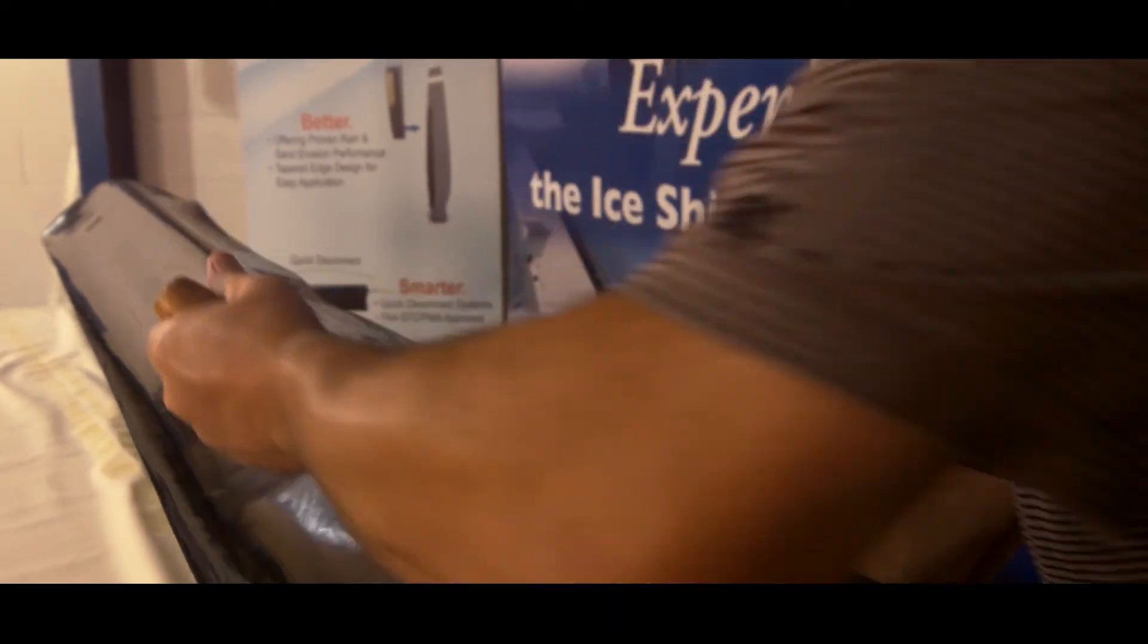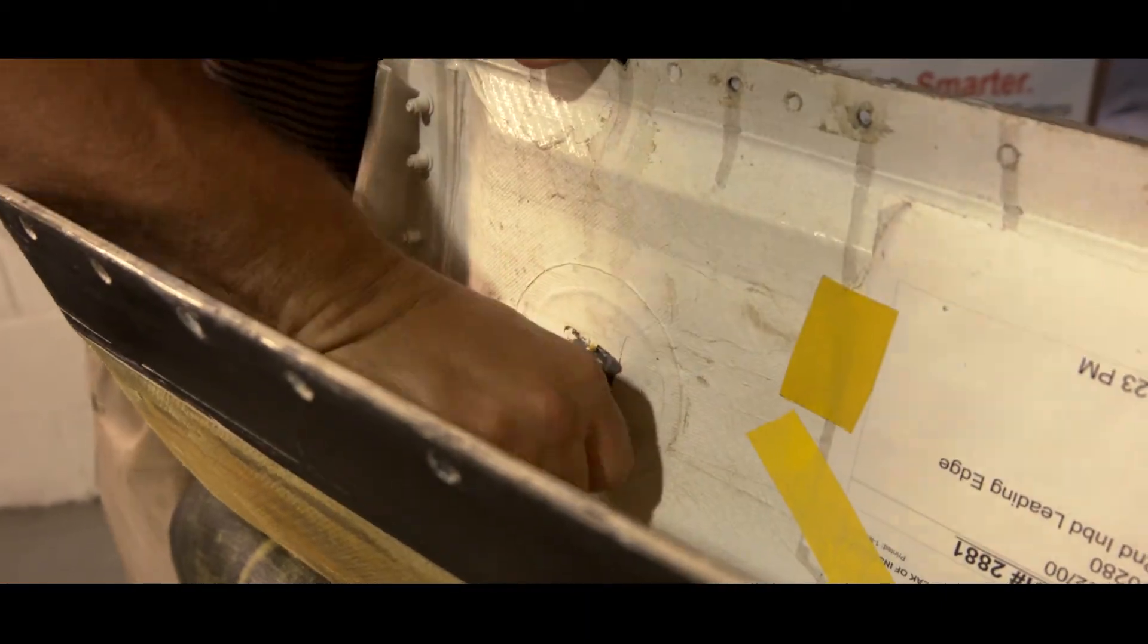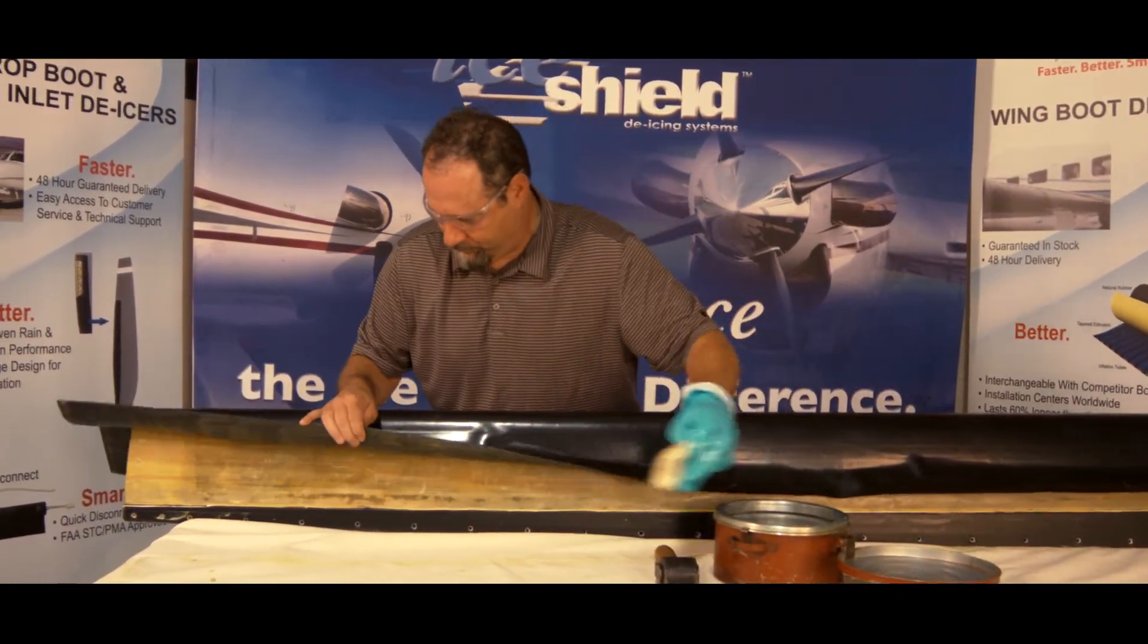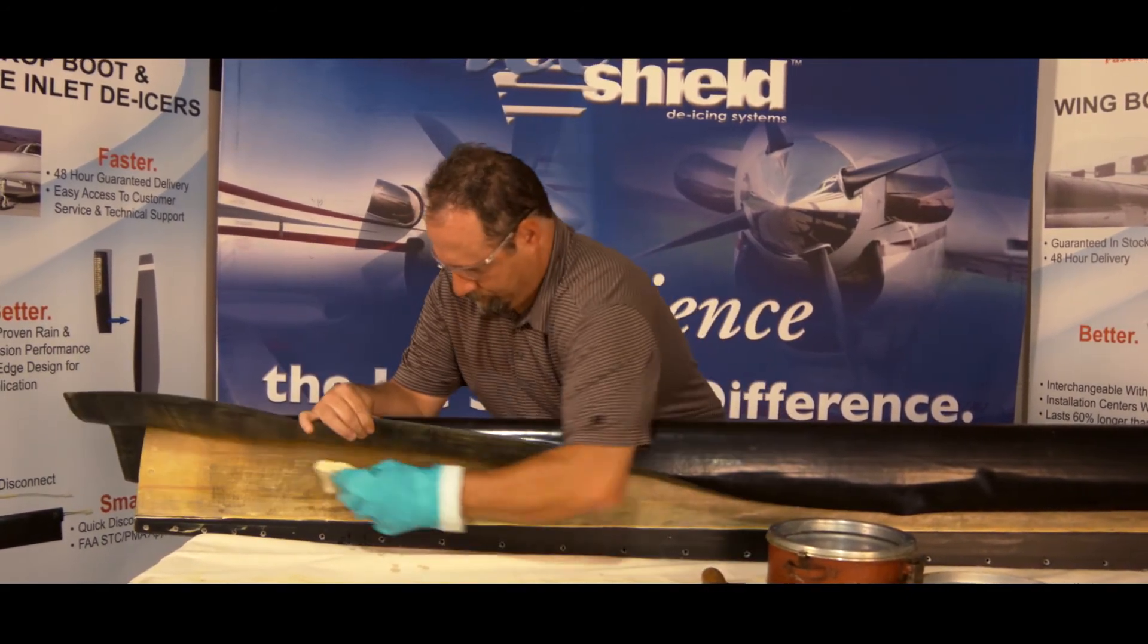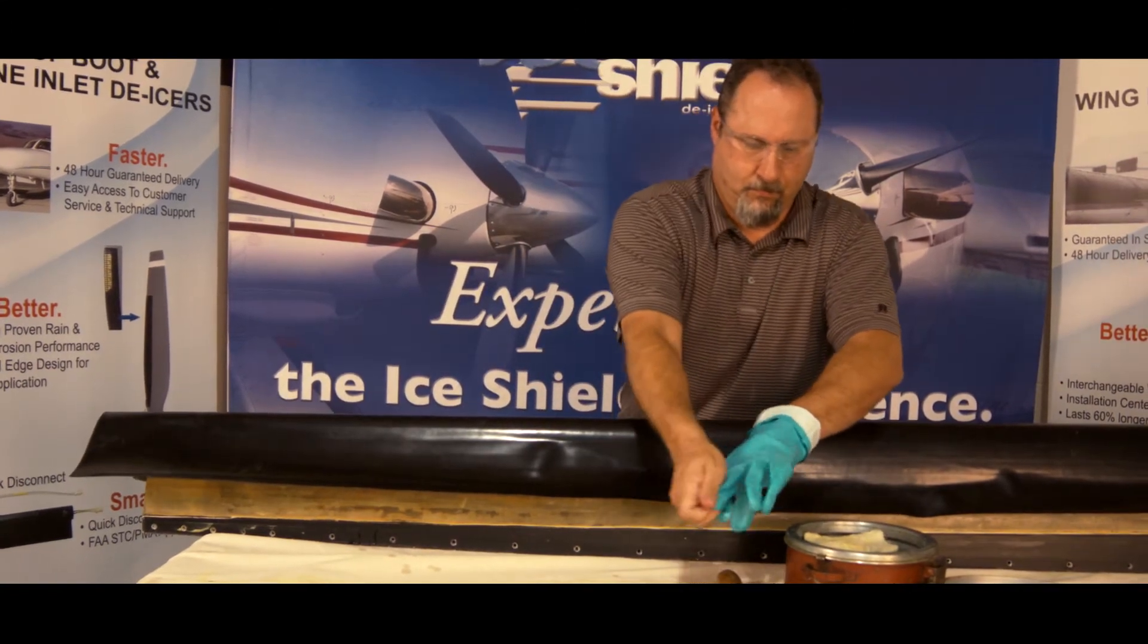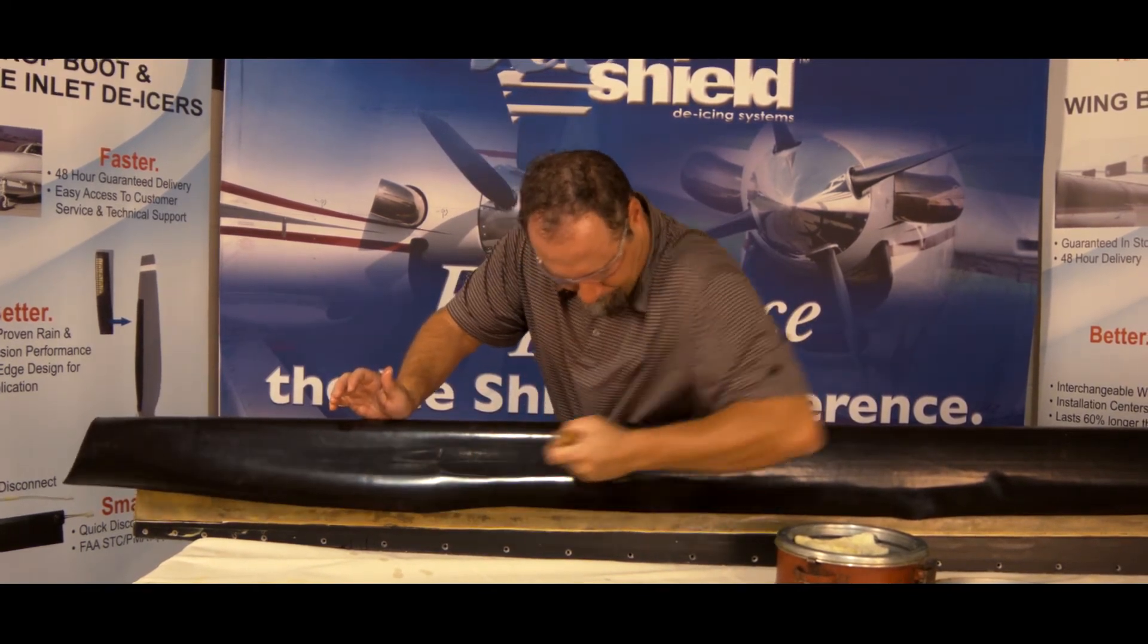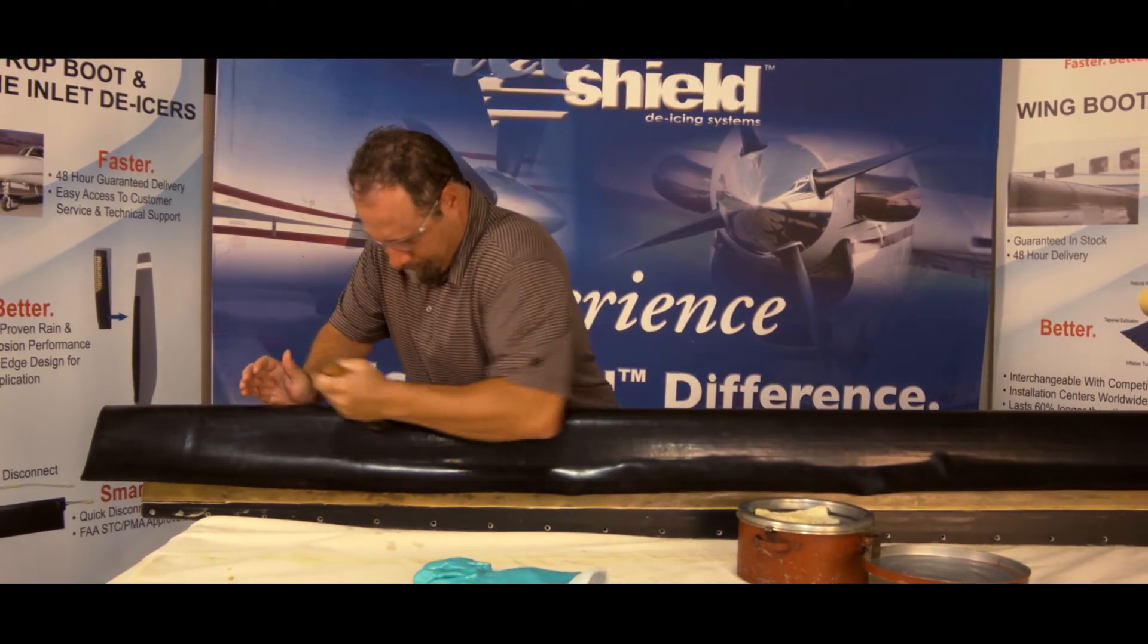After ensuring that the center line is properly adhered, apply 7.5 psi vacuum to the de-icer. Working from the leading edge to the trailing edge, repeat the process of activating 18 inch by 3 inch sections with a toluene swab, checking for tack, and rolling down the de-icer until the de-icer is completely adhered to the leading edge. This process will be used for the top and bottom surfaces of the wing until the entire boot is adhered.